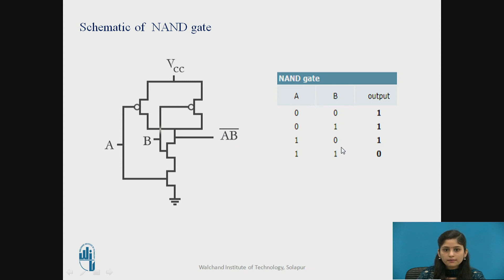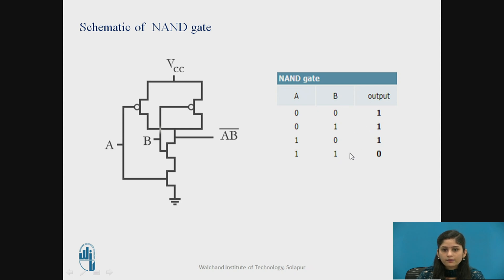This is the truth table of our NAND gate. If both inputs are low — input A is 0 and input B is 0 — the output is high. If input A is 0 and input B is 1, the output is high. When input A is high and input B is low, the output is high. When both inputs are high, the output is 0.